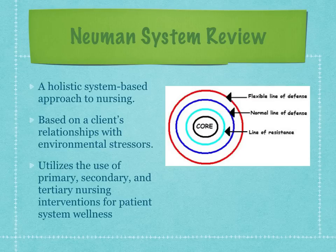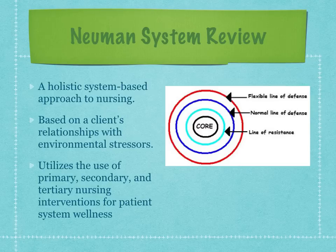Primary prevention relates to general knowledge applied in client assessment and intervention, focusing on identification and reduction of possible or actual risk factors associated with environmental stressors to prevent possible reaction. Secondary prevention relates to symptomology following reaction to stressors, appropriate ranking of intervention priorities, and treatment to reduce their noxious effects.